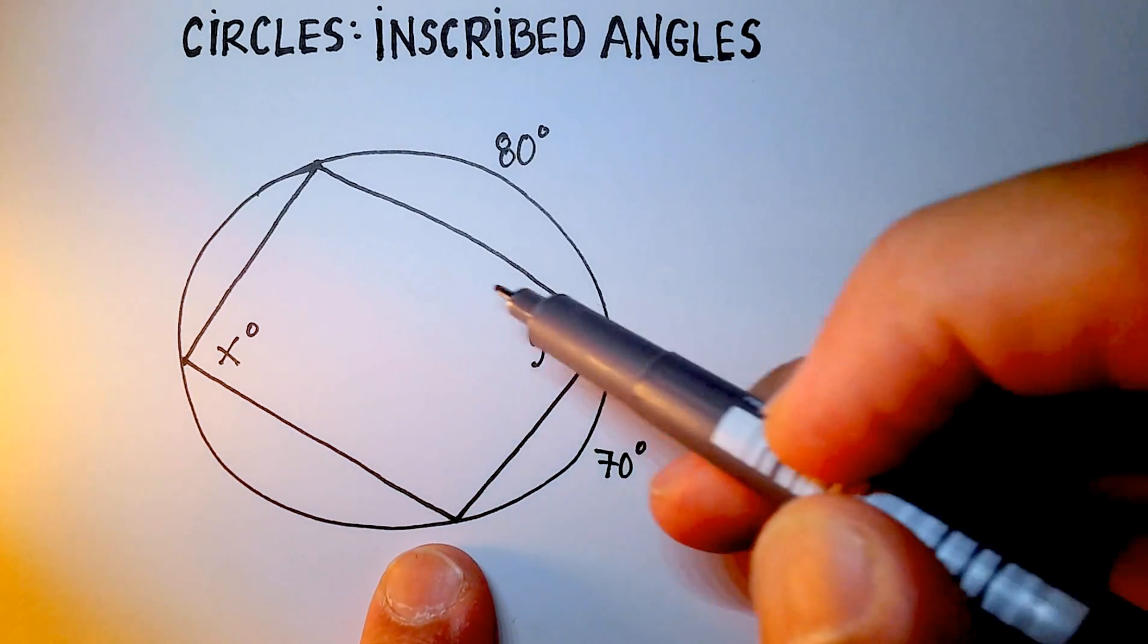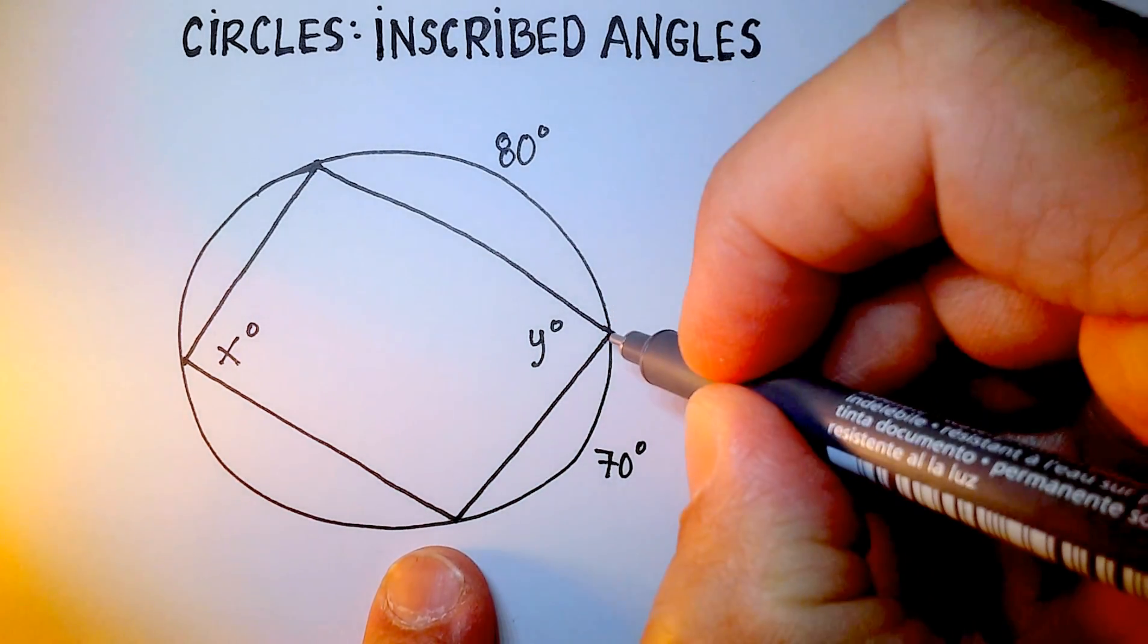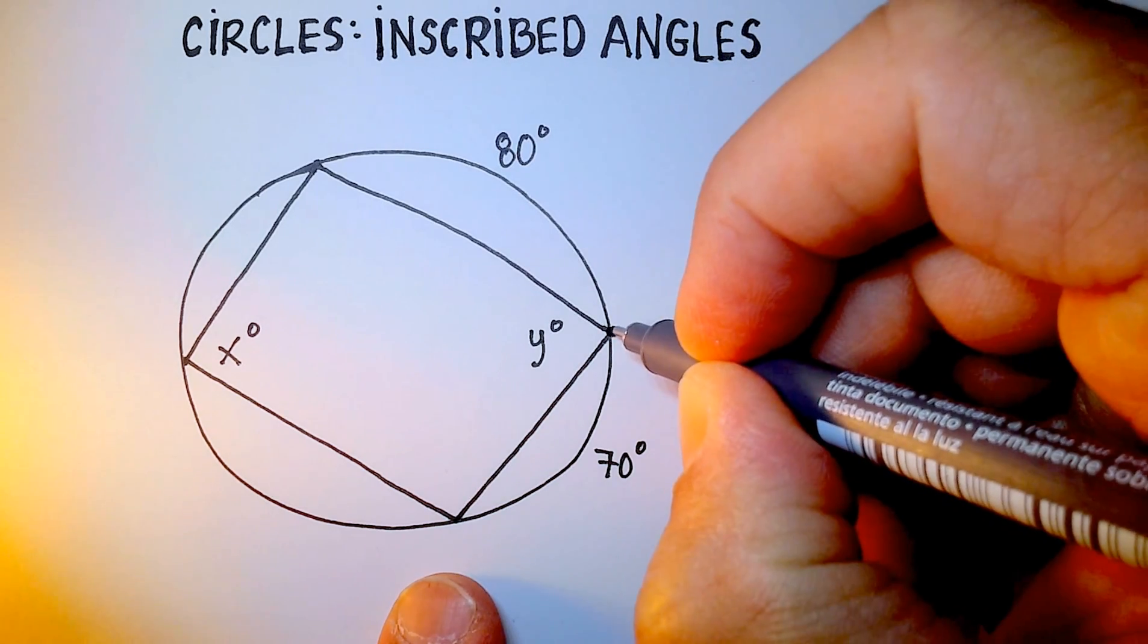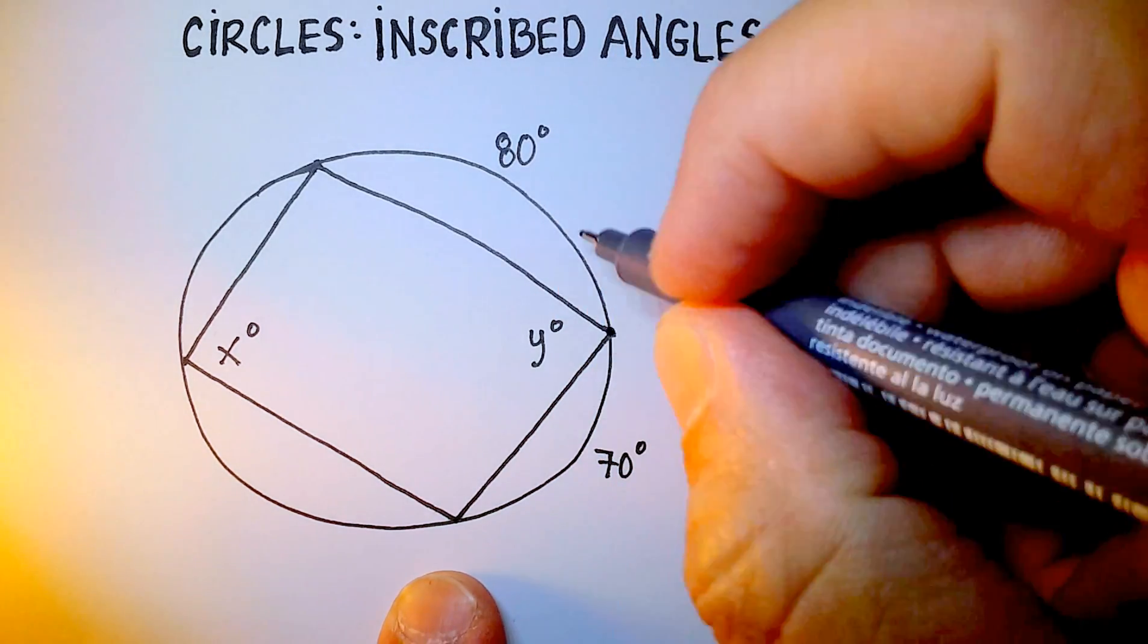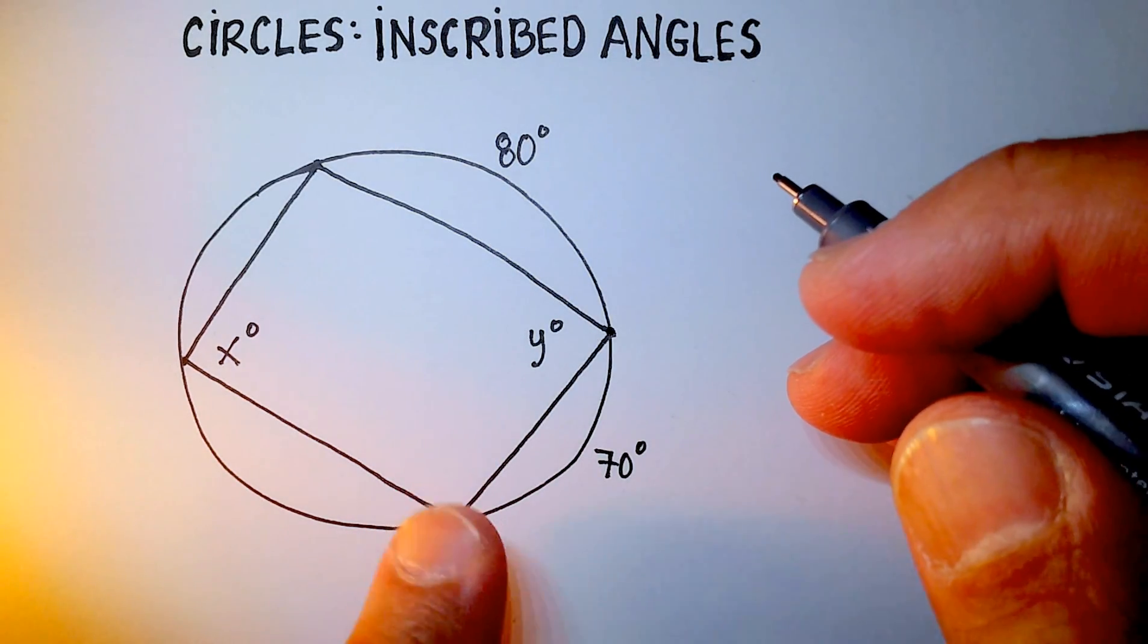Angle y is an inscribed angle as well. And remember that an inscribed angle has the vertex on the circumference of the circle and then two chords that go out and touch the circumference of the circle elsewhere.